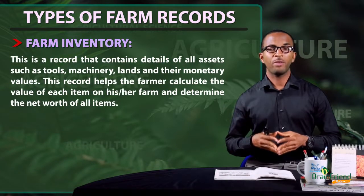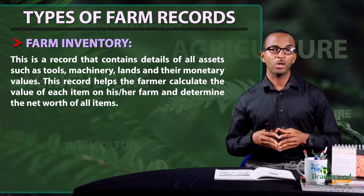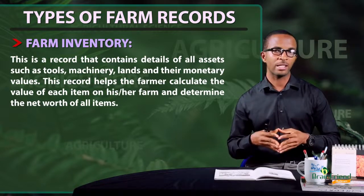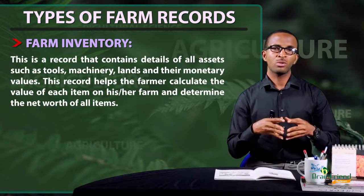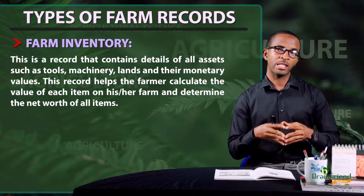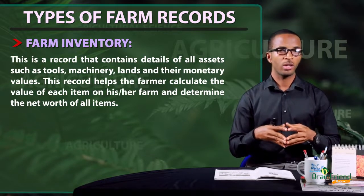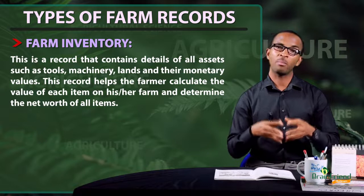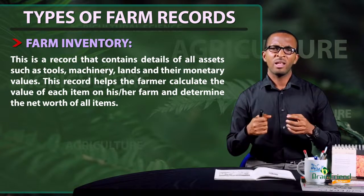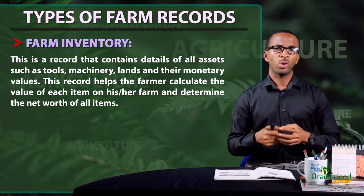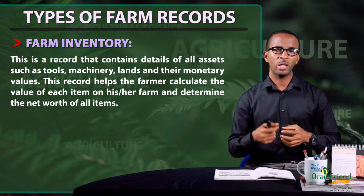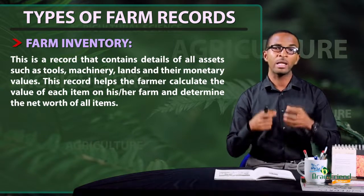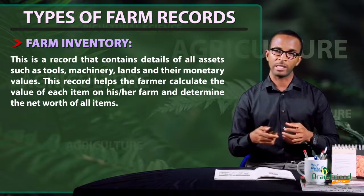Farm inventory: this is a record that contains the details of all assets on a farm. Some of those assets include tools, machinery, and lands, as well as their monetary values. This record will help the farmer to calculate the value of all his assets and determine the net worth of his assets.